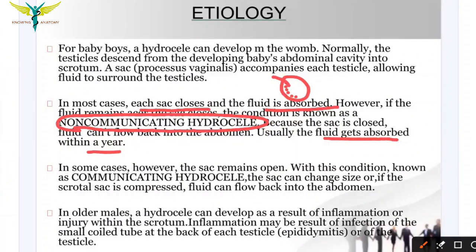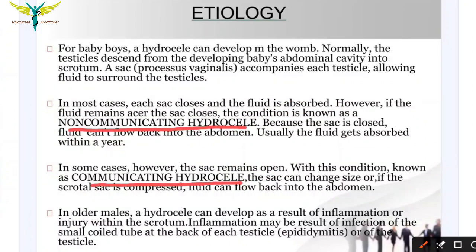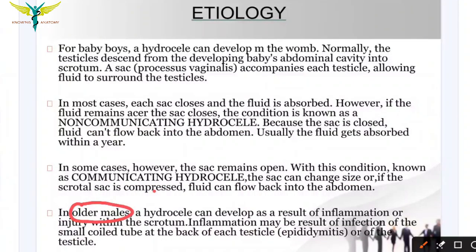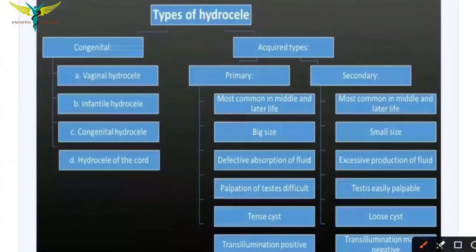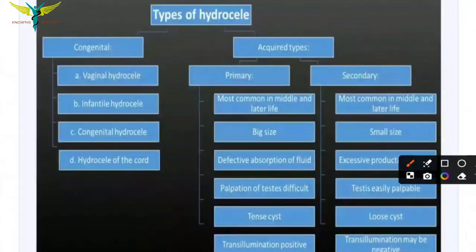In non-communicating hydrocele the sac is closed with remnant fluid around the testicle; this fluid usually gets absorbed within a year. In some cases the sac remains open — this is known as communicating hydrocele. Due to the remnant communication, the sac can change in size, be compressed, and fluid can flow back into the abdomen and again into the scrotum. In older males (above 40 years), hydrocele can develop from inflammation or injury within the scrotum, such as infection of the epididymis or testicle.